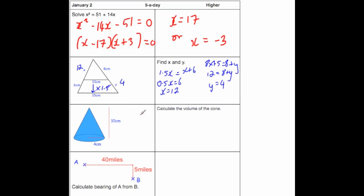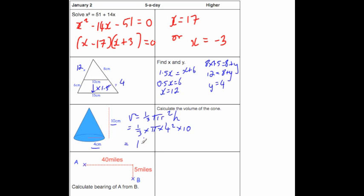The next question says find the volume of the cone. The volume of a cone is given by the formula: volume equals one third times pi times r squared times the height. The radius is 4 and the height is 10, so substituting in: one third times pi times 4 squared times 10. Working that out gives 167.55 centimetres cubed.